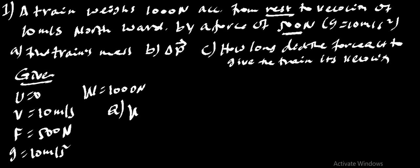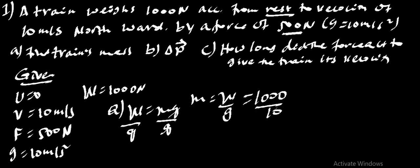from this we can calculate W is equal to mg over G. Therefore, mass is equal to weight over G, which is 1000 divided by 10 is equal to 100 kg. This is the mass of the train, which is 100 kg.